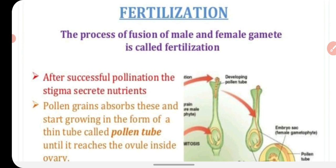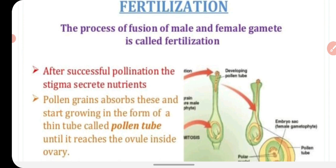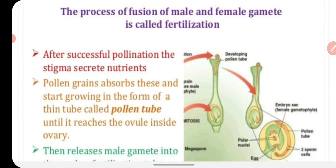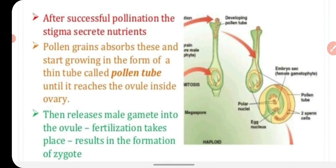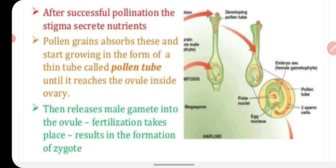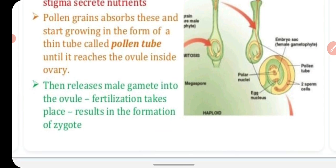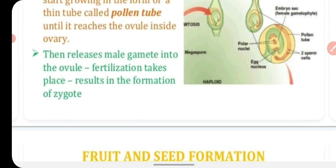Fertilization is the process of fusion of male and female gametes. After successful pollination, the stigma secretes nutrients and the pollen grain absorbs these and starts growing in the form of a thin tube called the pollen tube, until it reaches the ovule inside. The male gamete is then released into the ovule, fertilization takes place, and this results in the formation of a zygote.